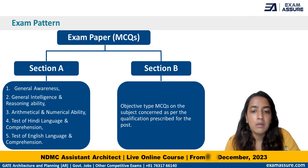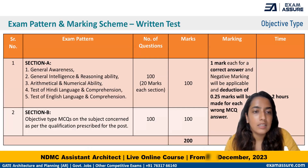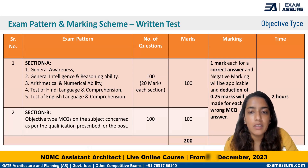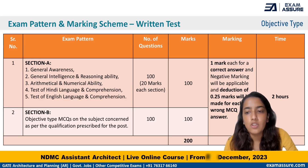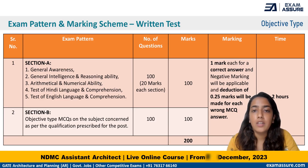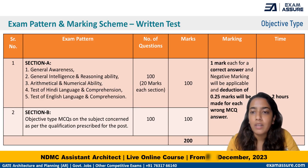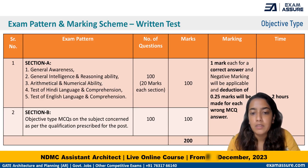As far as the marking scheme is concerned, Section A consists of general awareness and other aptitude topics. Each of the five sub-sections will consist of 20 questions each, making Section A a total of 100 questions for 100 marks. Section B, the architecture part, will also consist of 100 questions for 100 marks — meaning each question carries one mark. The total paper is 200 marks. For each correct answer you get one mark, and 0.25 negative marking is applied for every wrong answer. The paper duration is two hours.